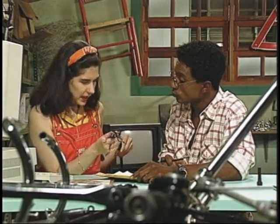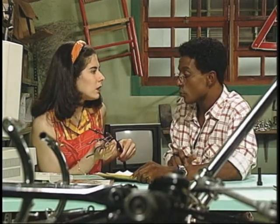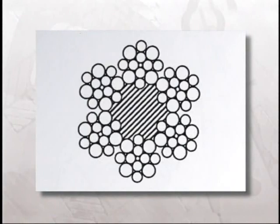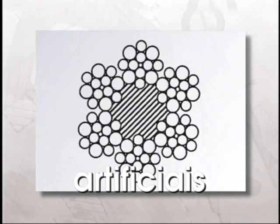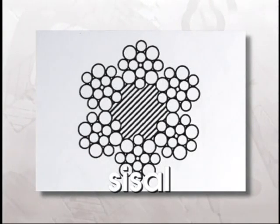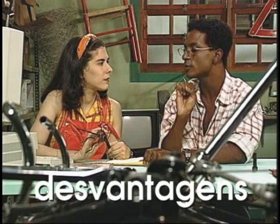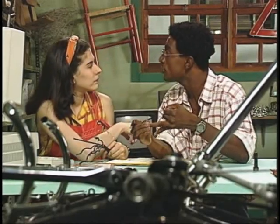As almas do cabo de aço são feitas de material que pode variar de acordo com a aplicação. Os tipos mais comuns são de fibra, de algodão, asbesto e de aço. A alma de fibra é o tipo mais utilizado para cargas não muito elevadas. As fibras podem ser naturais, como sisal ou rami, ou artificiais, como polipropileno. As almas de fibras artificiais têm a vantagem de não se deteriorar em contato com agentes agressivos e de não absorver umidade, mas são mais caras e só podem ser utilizadas em cabos especiais.